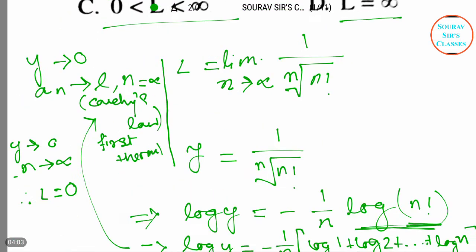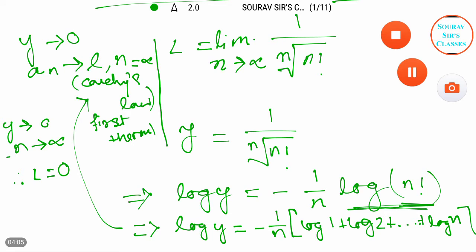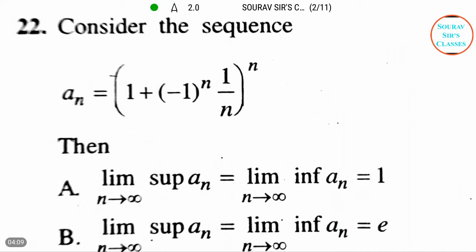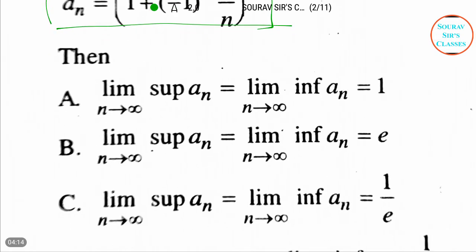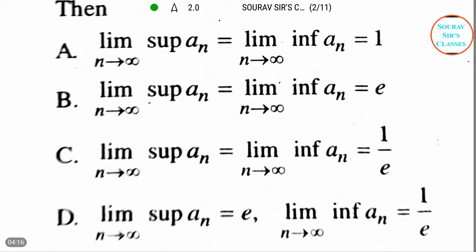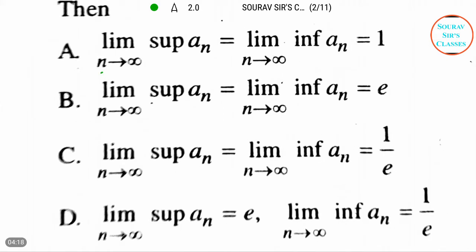Now moving to the next question. This question is about this sequence. We have to solve this and we have options like four options, and they are the following. Which one will be the correct answer for this problem?